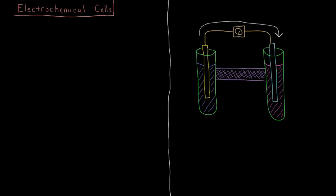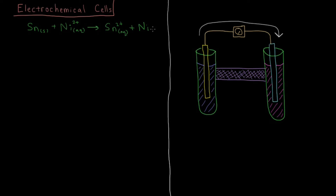To begin our discussion of electrochemical cells, let's look at a reaction between tin and nickel. We have solid tin reacting with aqueous nickel ions. There's a counter ion such as sulfate, but using the net ionic reaction, the counter ion doesn't play a part. The tin gets oxidized to become 2+ aqueous ions, and the nickel goes from 2+ and gets reduced with 2 electrons to form solid nickel.